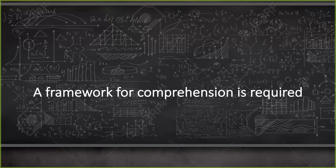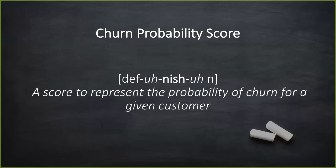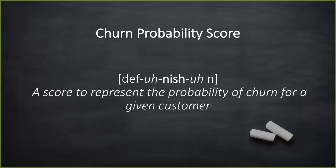A framework was really required in order to manage all of these signals and help predict that future outcome we were trying to accomplish. The framework we created, we called the churn probability score. You're welcome to call it whatever fits — a churn predictability score, a renewal health score — but we called it a churn probability score. Ultimately, this was a simple score that represented the likelihood that a customer would have a given amount of churn, and in aggregate it gave us a good understanding of the amount of churn we could forecast for a given quarter.